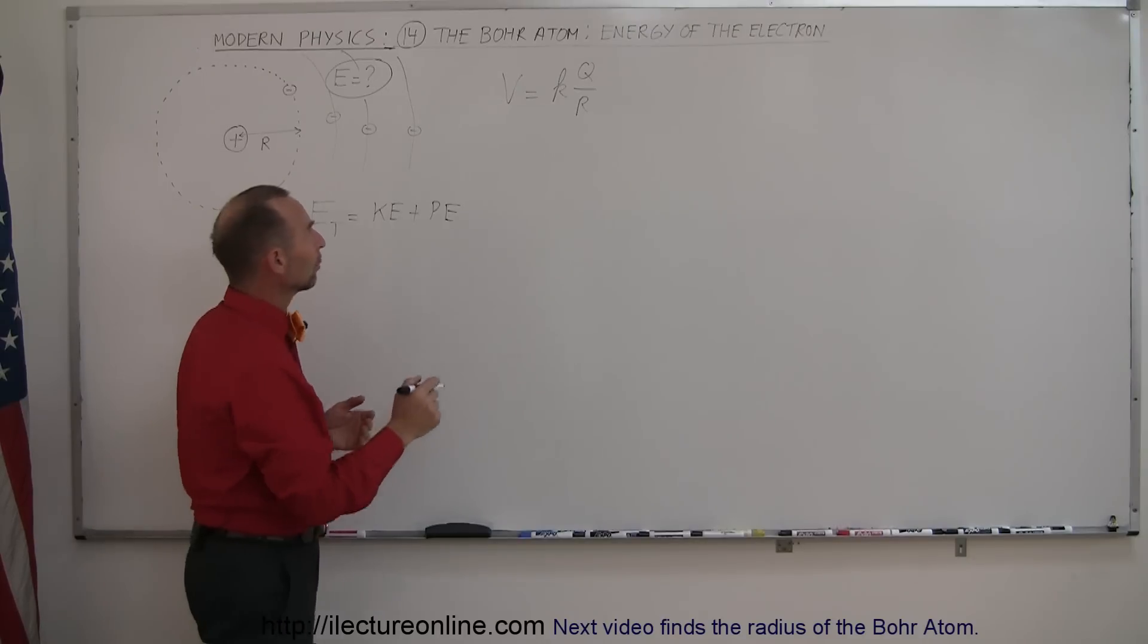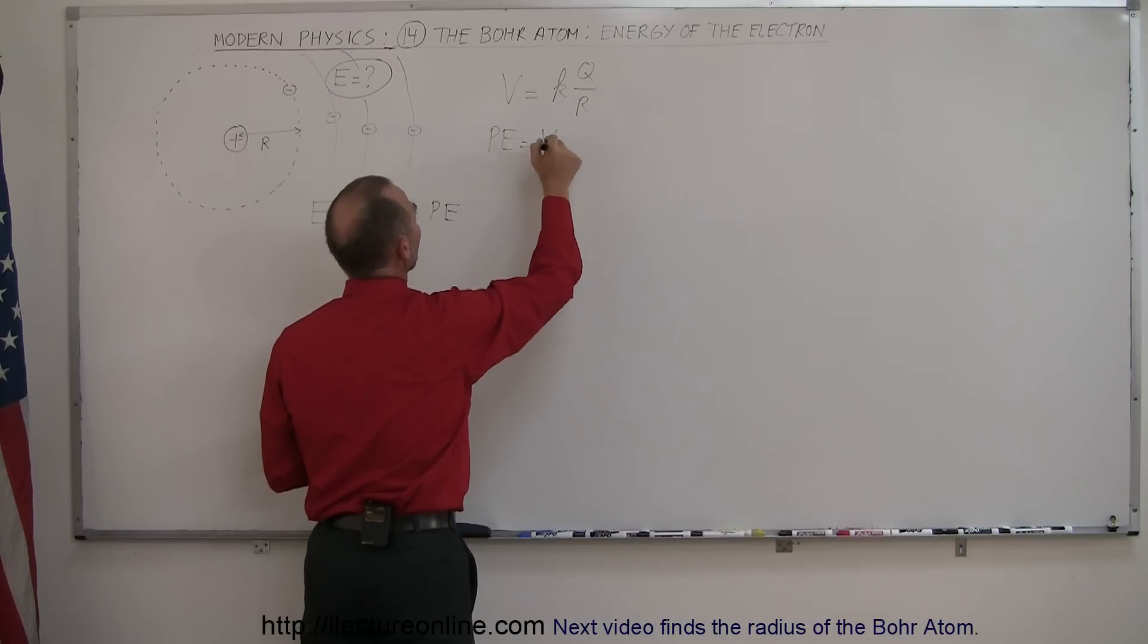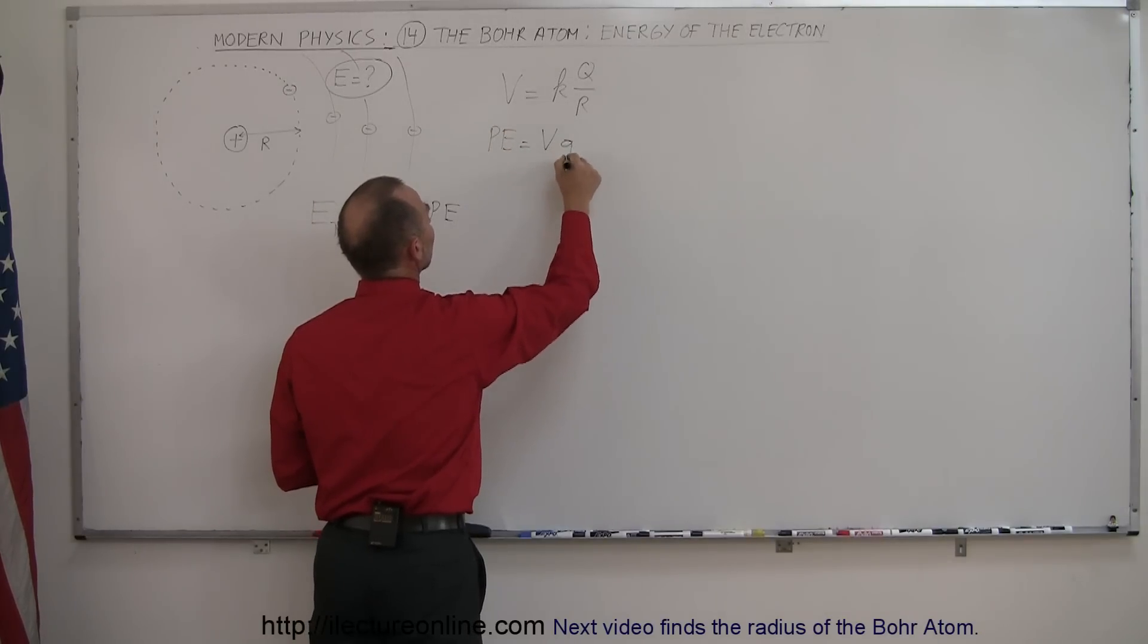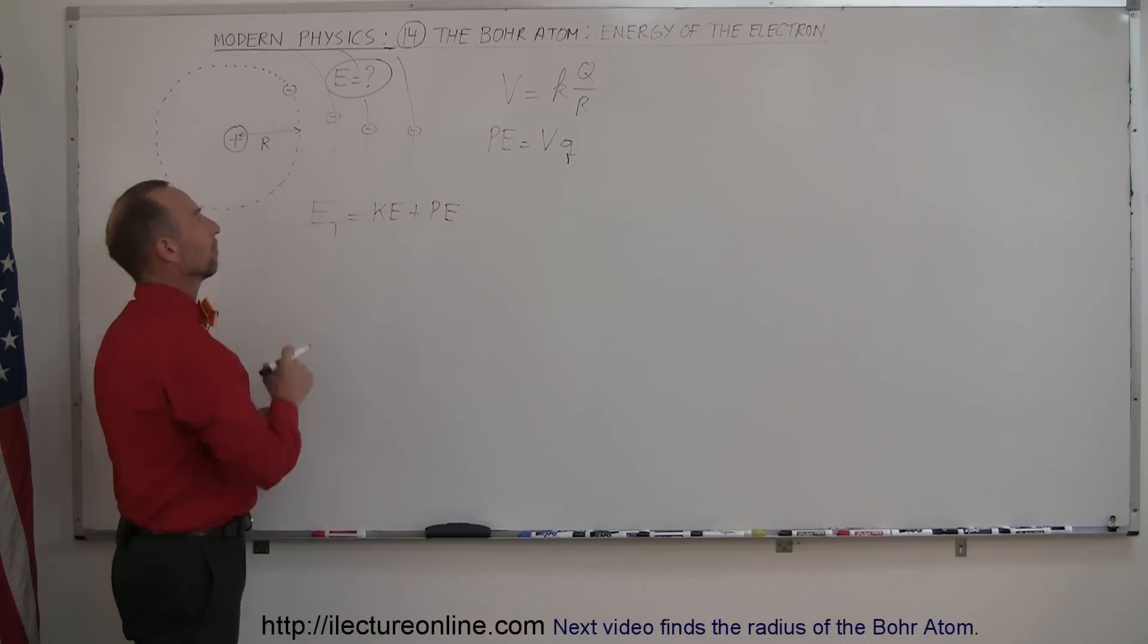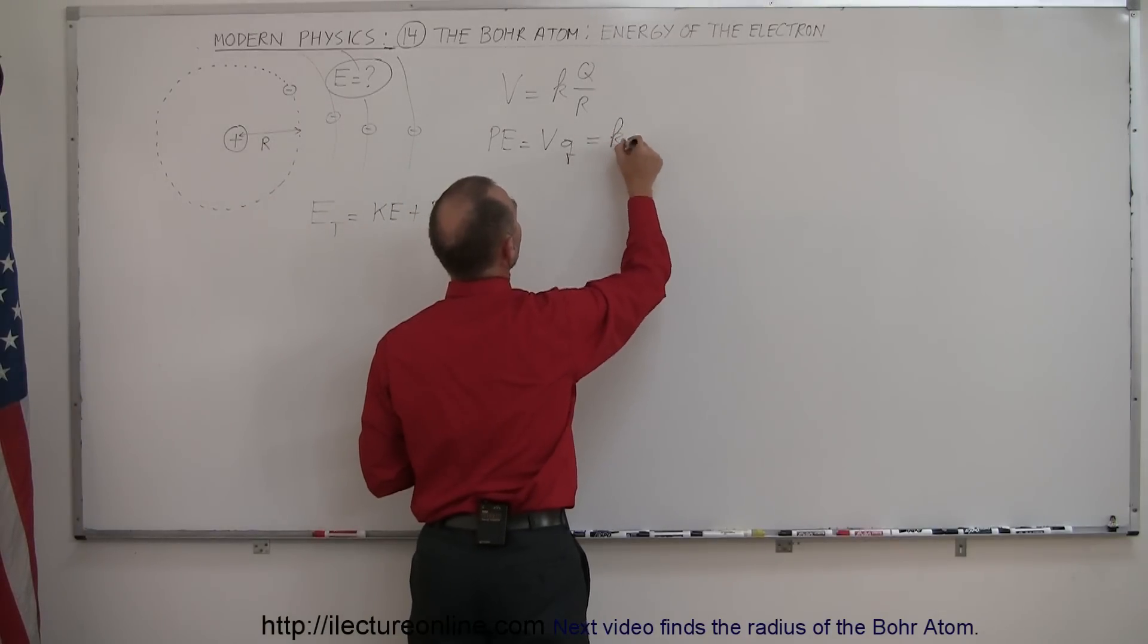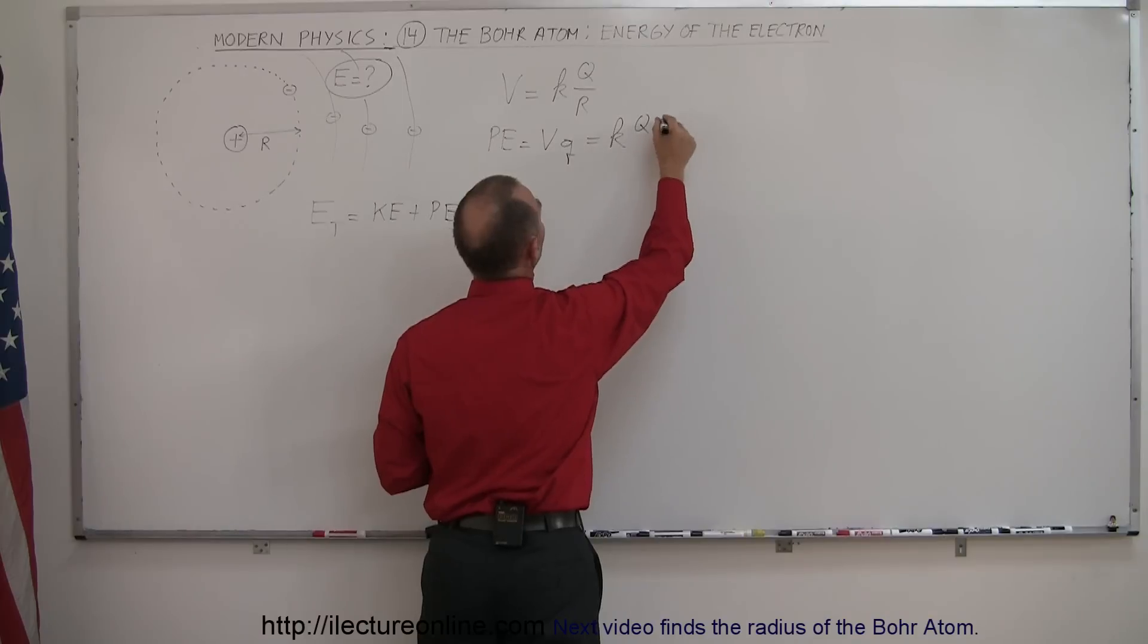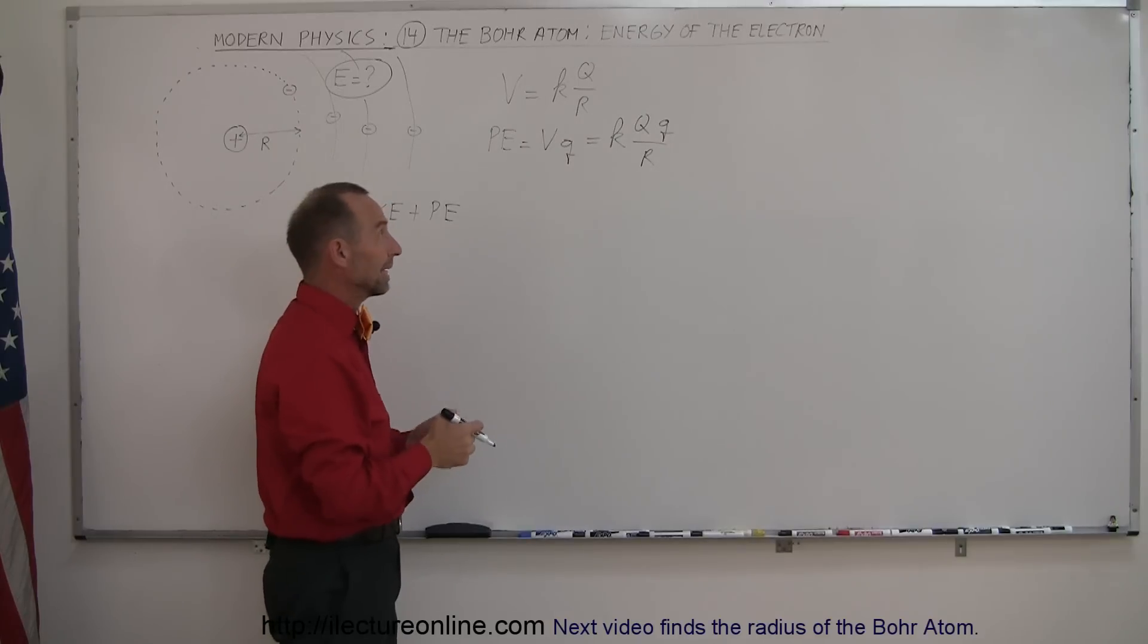To find the potential energy you would multiply the potential at that location times the charge placed at that location in that potential, which would be the electron. If you bring those two together, that would be equal to K times Q of the proton times Q of the electron divided by R.